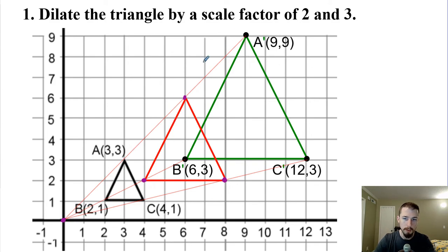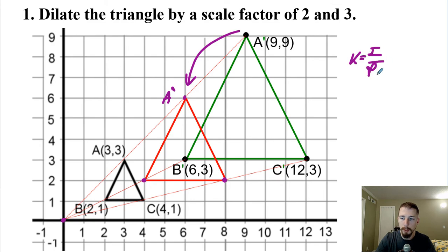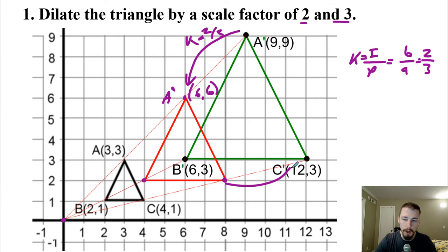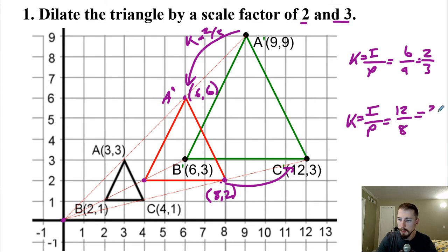If we go from the scale-factor-three image (A prime at (9,9)) to the scale-factor-two image (A double prime at (6,6)), we can find the scale factor: K = image ÷ pre-image = 6 ÷ 9 = two-thirds. So K equals two-thirds. Going the other direction — from C double prime at (8, 2) to C prime at (12, 3) — K = 12 ÷ 8 = three-halves. So K equals three-halves, or 3/2.